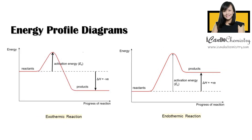The arrow up should touch the dotted line and the energy level of the products. This completes our energy profile diagrams for both exothermic and endothermic reactions. You are more commonly asked to draw the energy profile diagram in exams, so you should be very clear on how to complete it accurately.